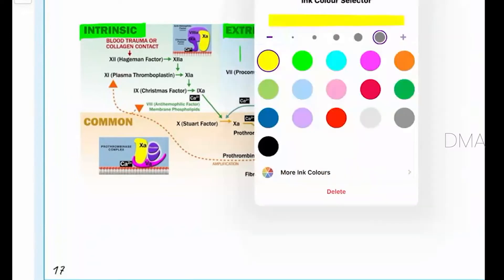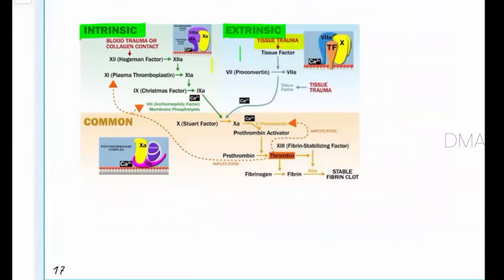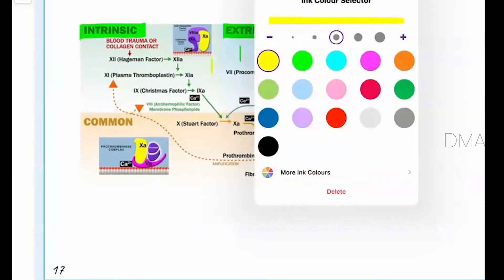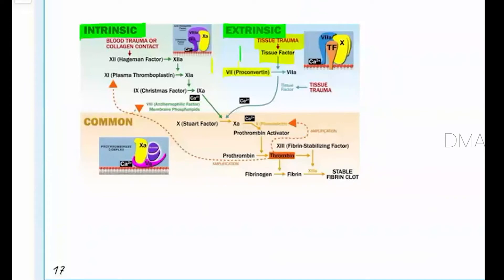In the extrinsic pathway, once you encounter tissue damage, the damaged tissue releases the tissue factor. This tissue factor will first activate Factor 7, that is pro-convertin, into its activated form. Then this activated Factor 7, along with the tissue factor and with the help of calcium, will convert Factor 10 into its activated form.